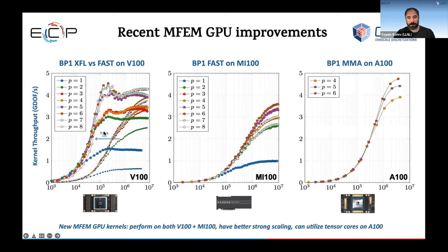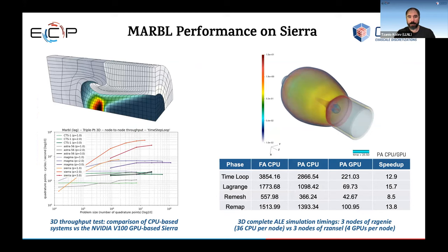We also have kernels in MFEM that can take advantage of tensor cores on NVIDIA hardware, and we are extending this to others — getting four to five giga DOFs per second for orders four to six on A100. These kernels are then used in applications. One of the target applications for MFEM is the Marbl code. Here you can see test problems including a triple point shock wave in 3D and a shape charge in 3D, showing speedups from full assembly to partial assembly on CPU, with substantial further speedup on the GPU.